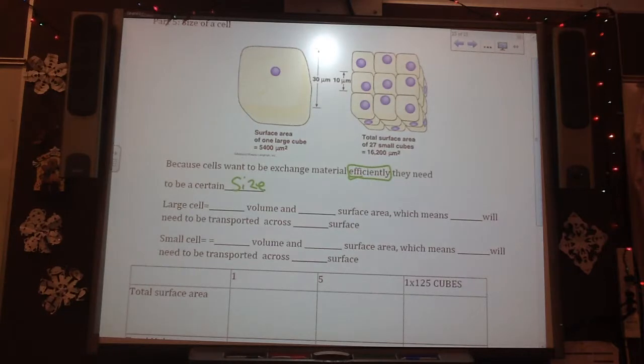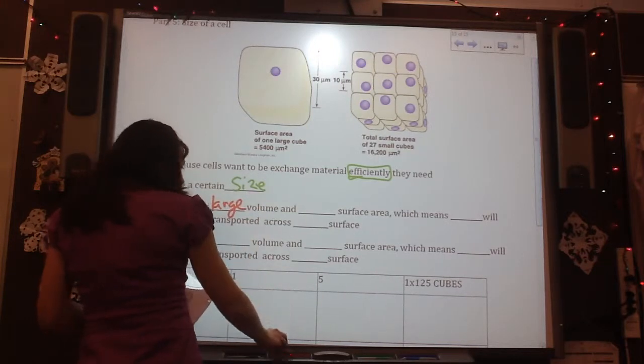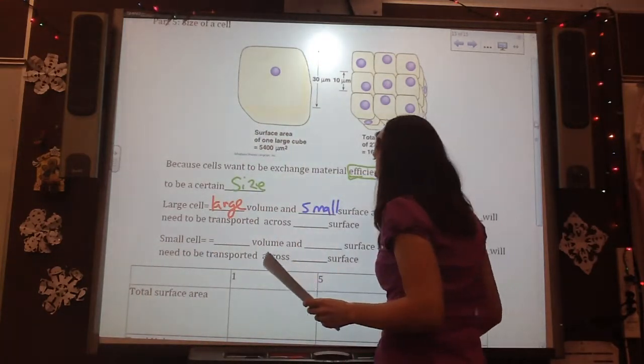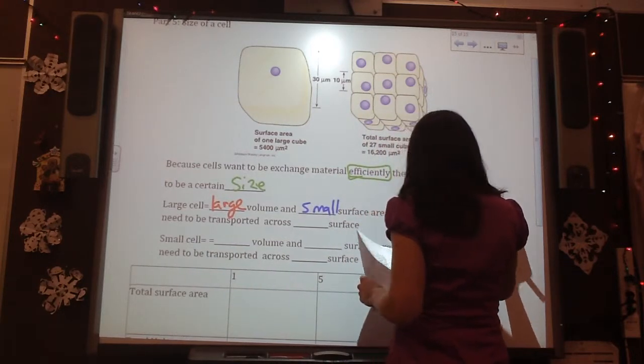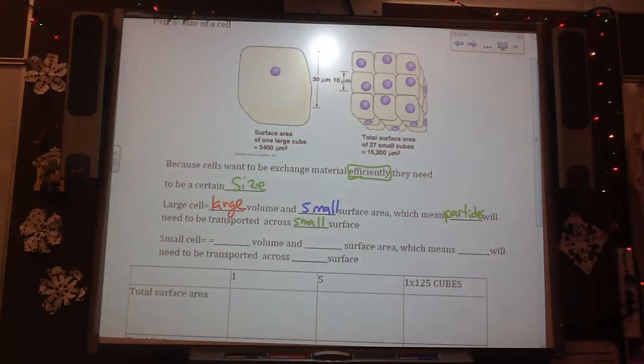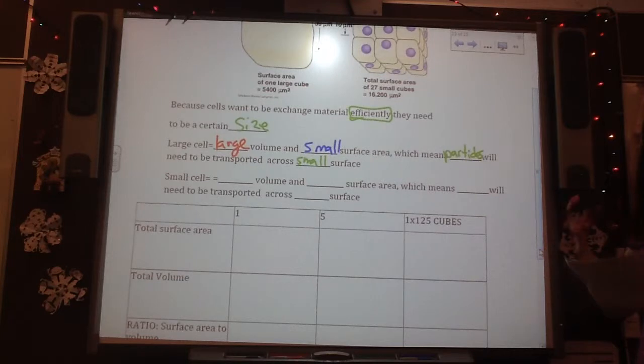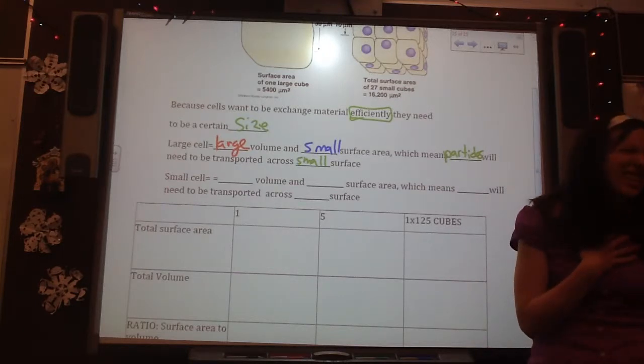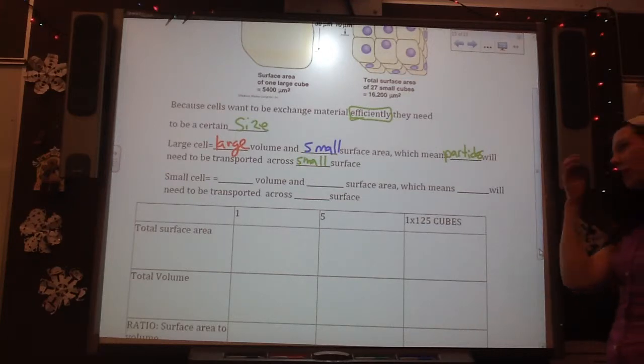So, let's say we take this size of cell, and then say, what if the same amount of area would be a whole bunch of little cells? This situation is much more efficient at transporting materials than this situation. You guys have already kind of brainstormed that idea. So, because cells want to exchange material efficiently, right? They need to be a certain size. So, a large cell...